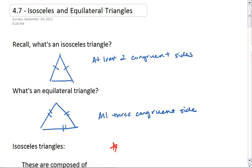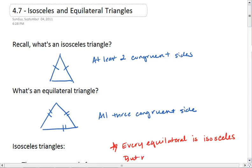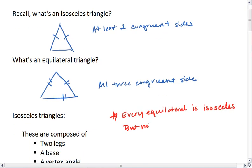This means that every equilateral triangle can also be classified as isosceles. But not every isosceles triangle is equilateral. So an equilateral triangle is always isosceles, but an isosceles triangle is sometimes equilateral.